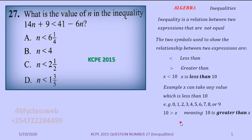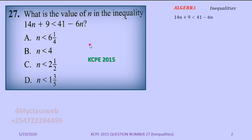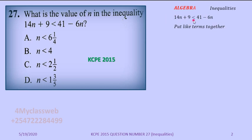The expression given is: 14n + 9 < 41 − 6n. There is 14n on the left and −6n on the right, a +9 on the left and 41 on the right. What you do is put like terms together — group the n's together and the constant values on their own side. So I want −6n to cross to the other side and +9 to cross to the other side.